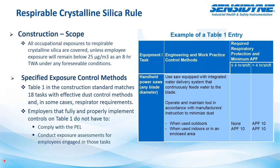A couple of things about Table 1: the far left column lists a specific tool or activity, the center column describes engineering or work practice control methods, and the right columns address respiratory protection. APF is the assigned protection factor — OSHA dictates different APFs for different respirator types. In this case, they mainly use an APF of 10, meaning the device will protect the wearer up to 10 times the permissible exposure limit.